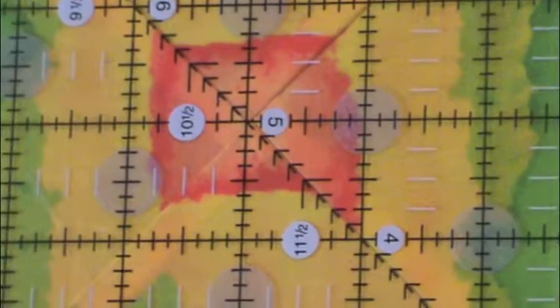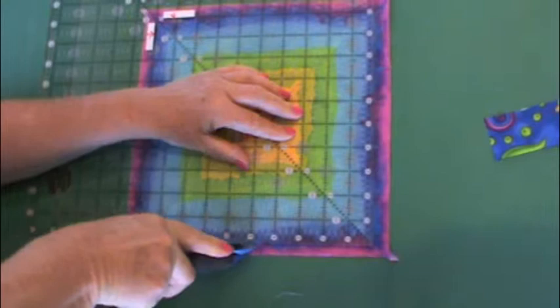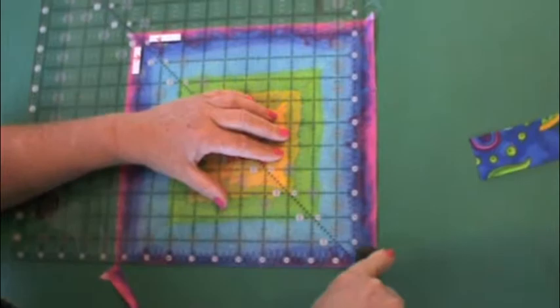Now this is going to line everything up nice and square and I'm going to cut the first two sides. This side and then I'm going to cut this side.